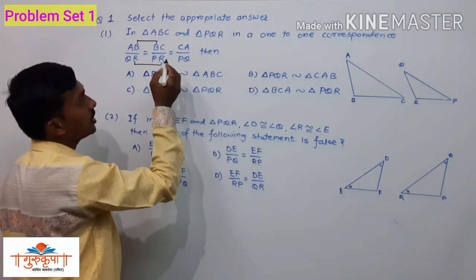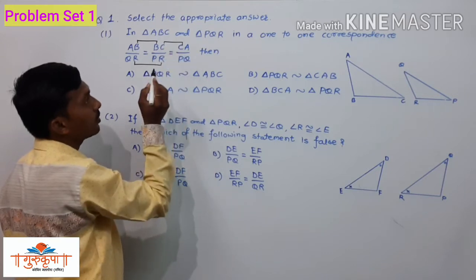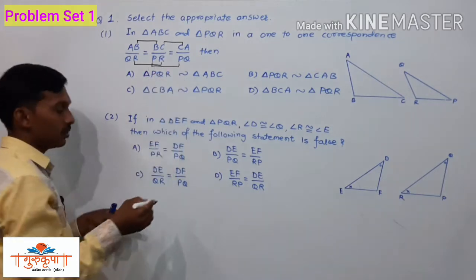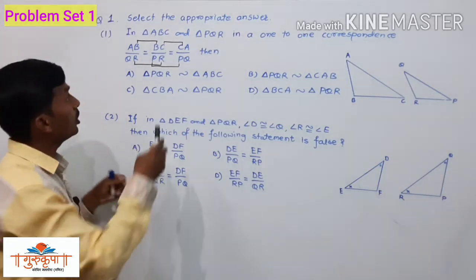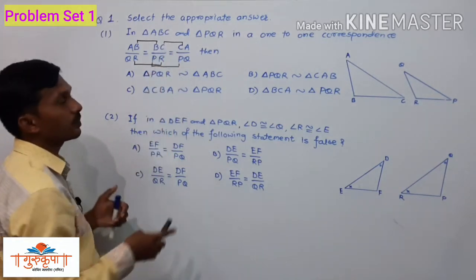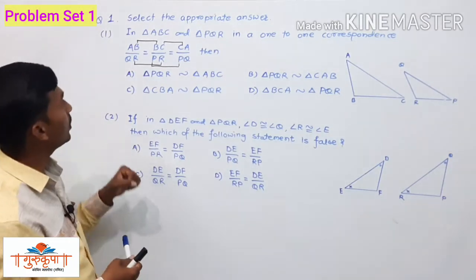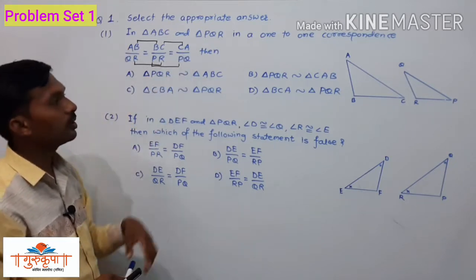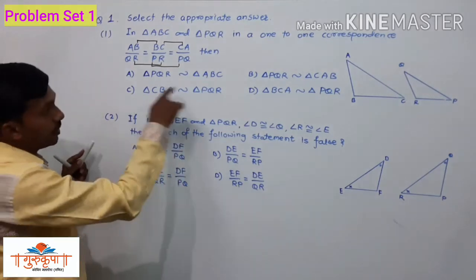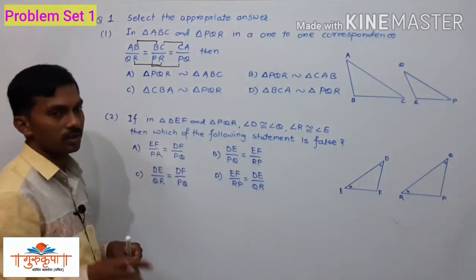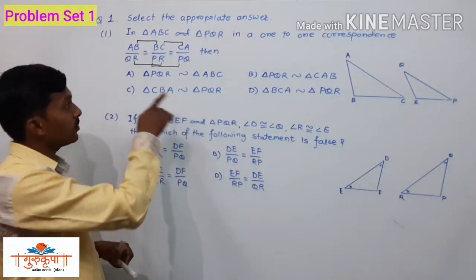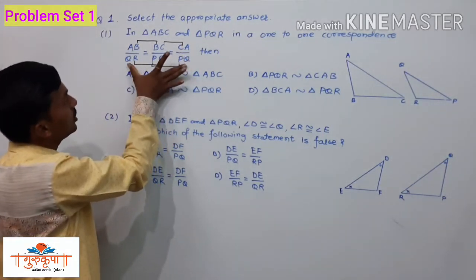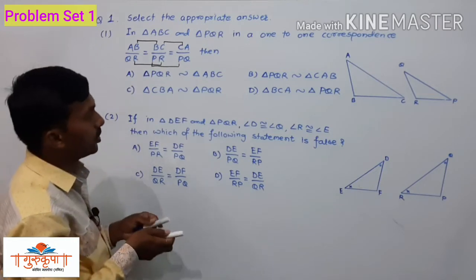BC and CA are adjacent sides with C as the common point. PR and PQ are adjacent sides with P as the common point, so the corresponding point of C is P. The remaining vertex A corresponds to Q. Now we have to determine the correct correspondence — the triangles are similar but their names are written according to the one-to-one correspondence.